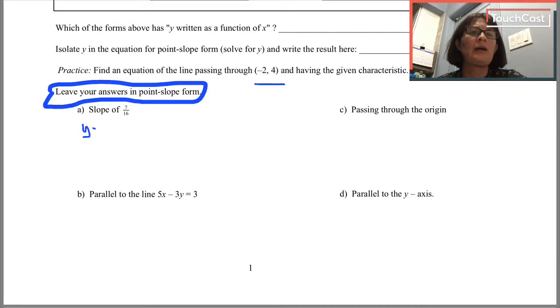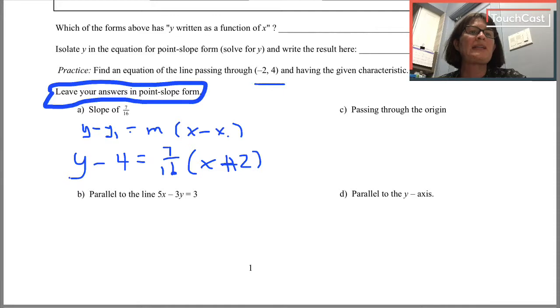So I'm going to write y minus y1 equals m times the quantity x minus x1. I've been asked to leave my answer in point-slope form, so I'm going to write y minus 4 equals 7 sixteenths x minus negative 2. I'm going to end up writing x plus 2. That was x minus negative 2. That's one big plus sign, x plus 2.